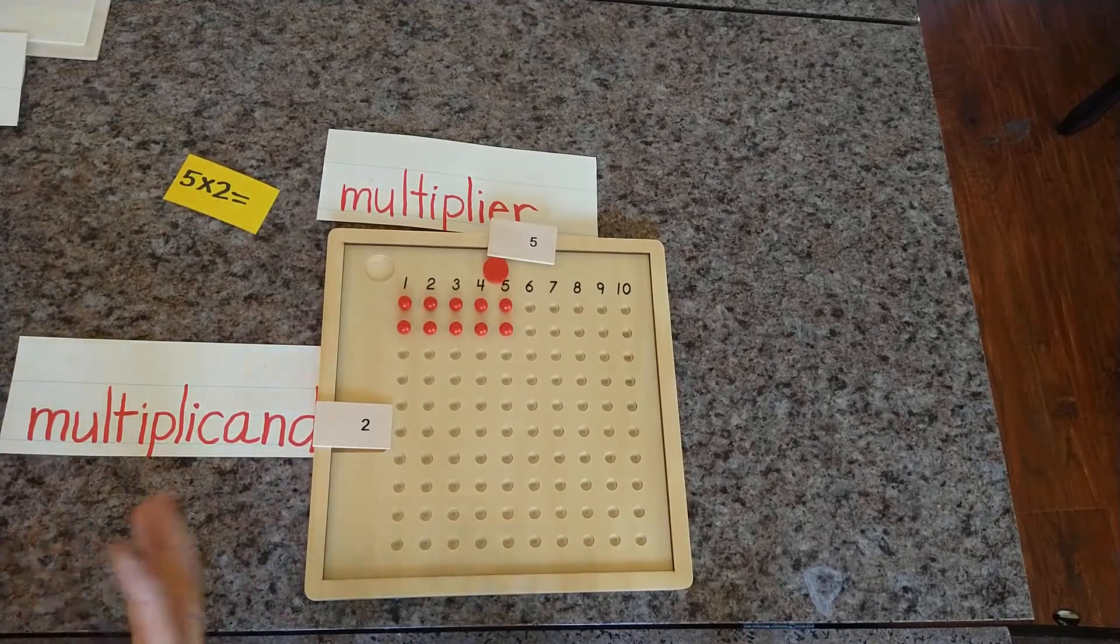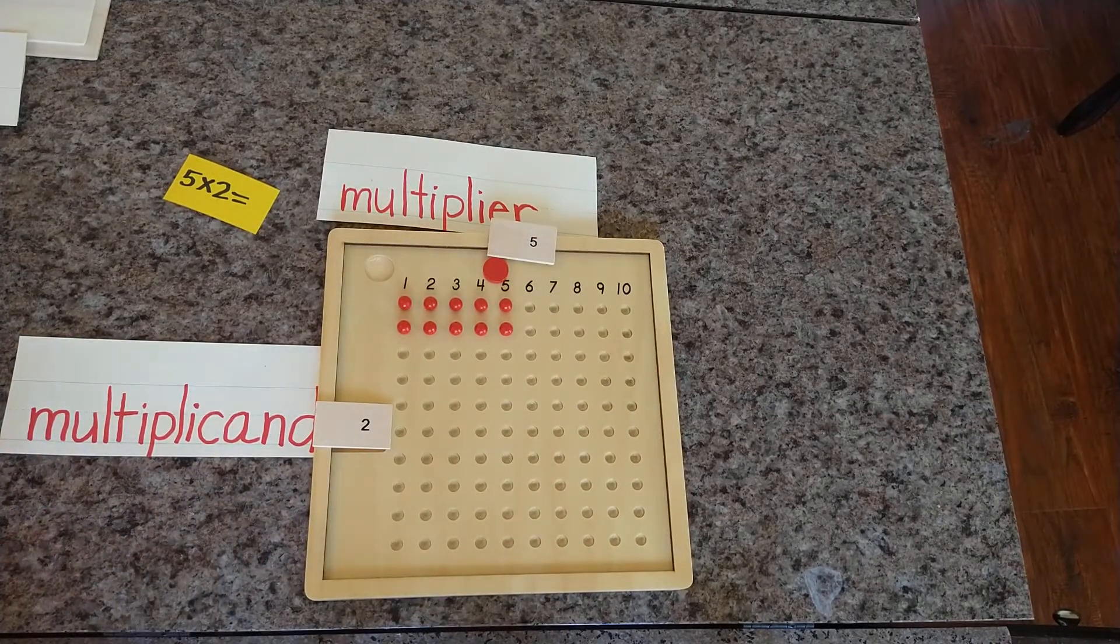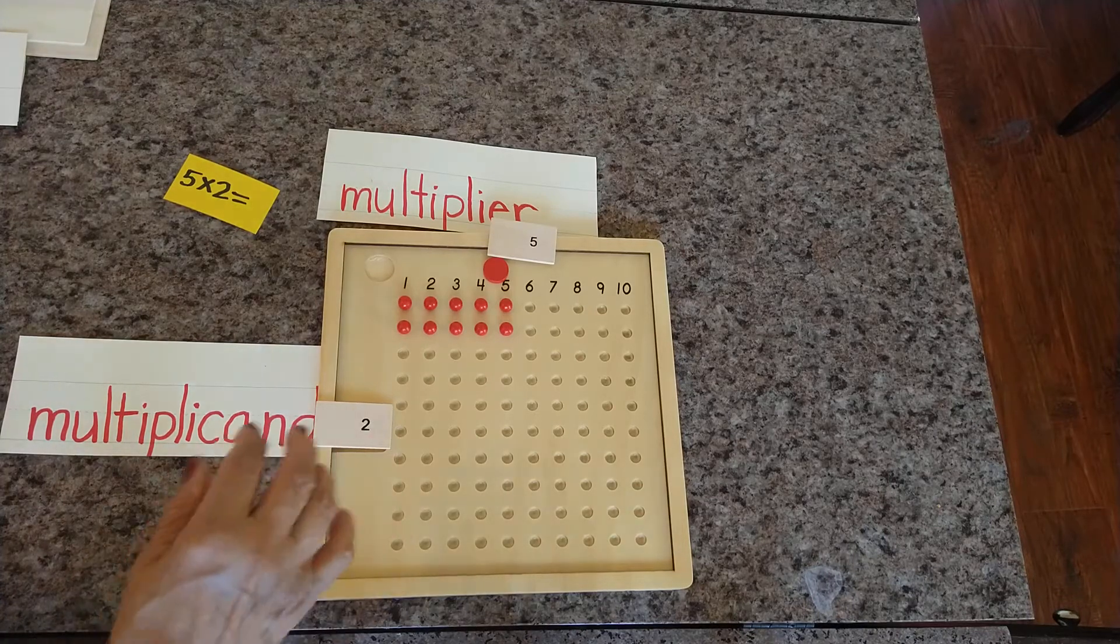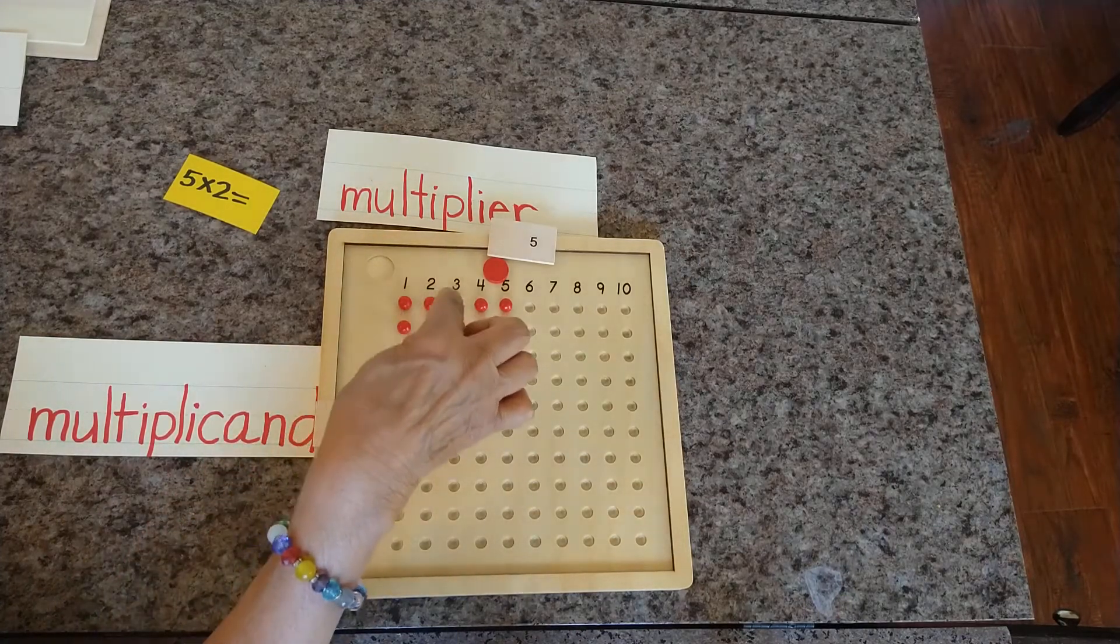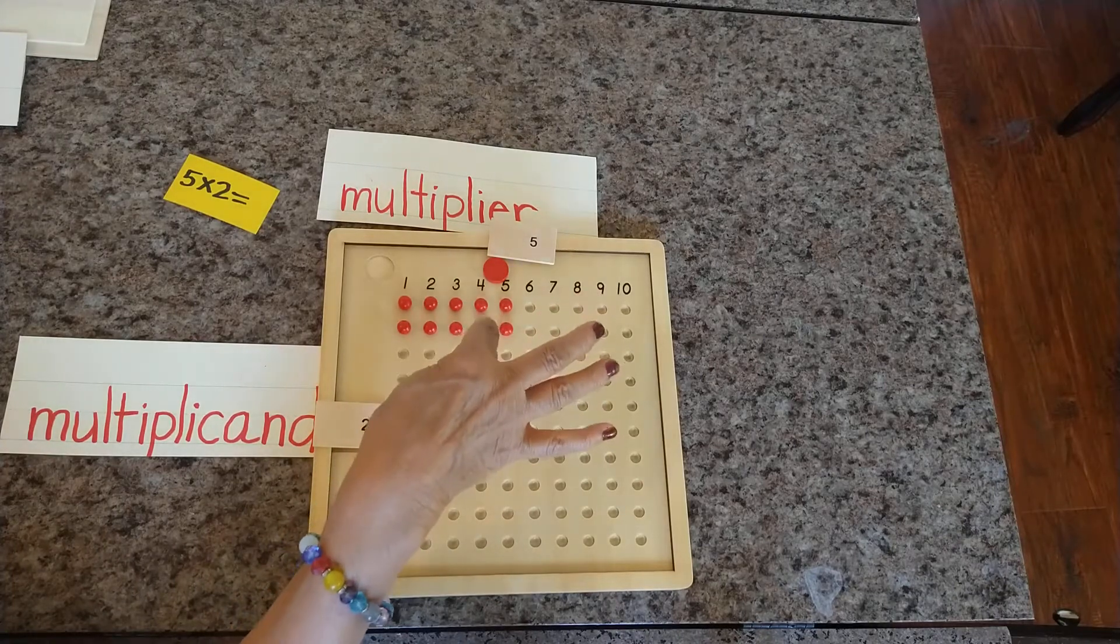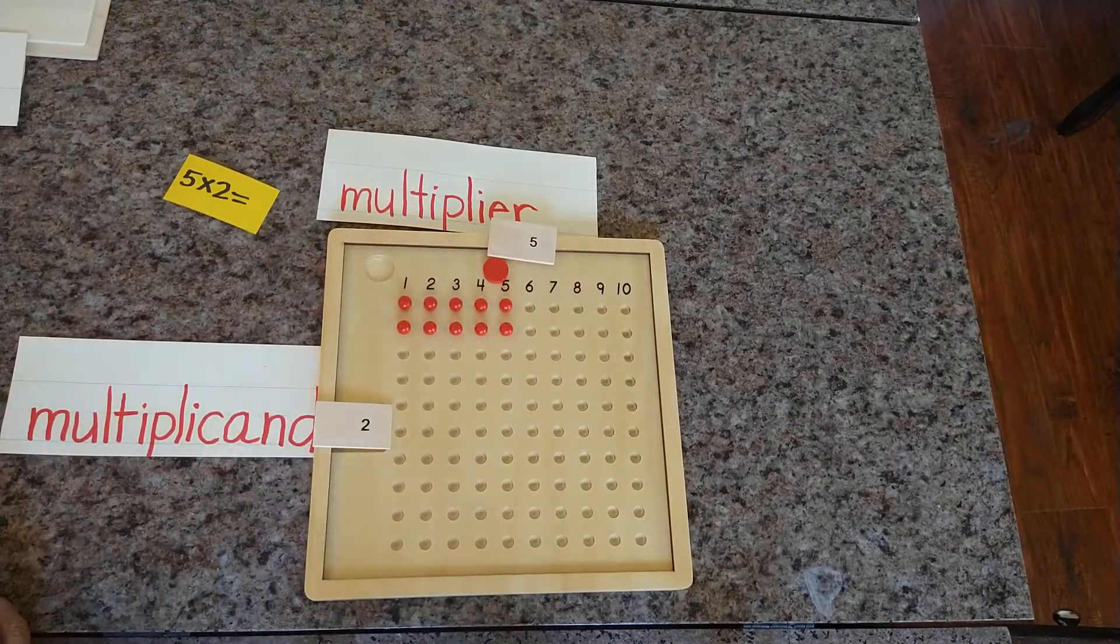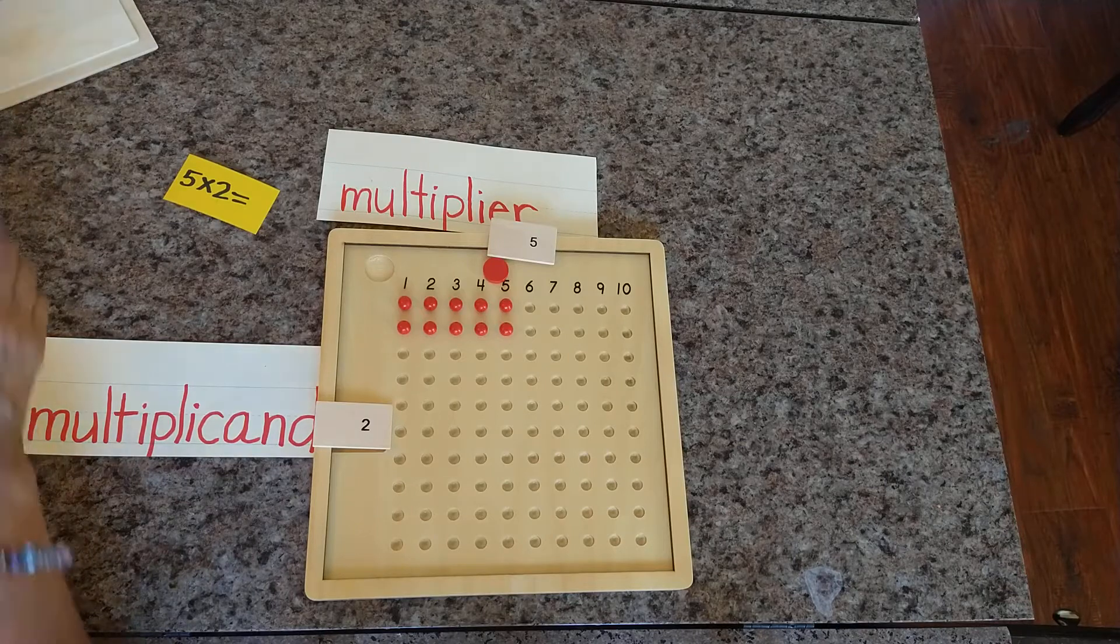If you don't know, you could count together all the beads. Let's count together all the beads. 1, 2, 3, 4, 5, 6, 7, 8, 9, 10. So our product is 10.